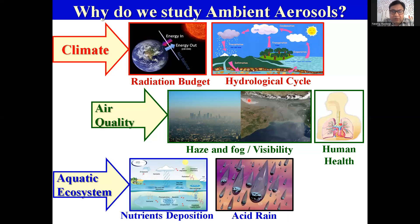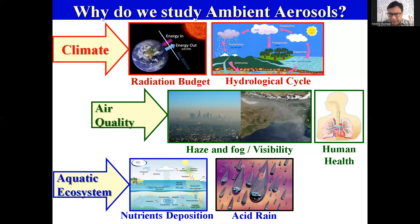Aerosols also affect our aquatic ecosystem. Once aerosols are in the atmosphere, they move along with the air. Many of these aerosols are nutrients — for example, nitrate or iron are actually nutrients, and their deposition over remote oceans or lakes becomes a supply of nutrients to those places. And if there are too many acidic species in the air, they come down in the form of acid rain. Acid rain can affect our monuments — for example, the Taj Mahal — or it can affect crops, buildings, and many other things.